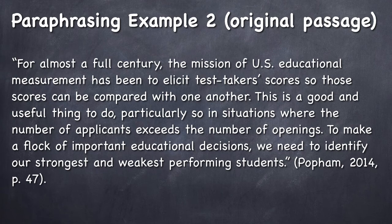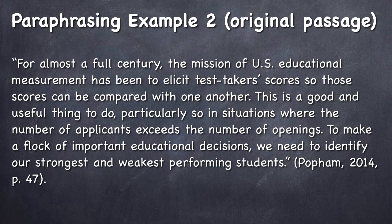Here's our second paraphrasing example. Here's the original passage. For almost a full century, the mission of US educational measurement has been to elicit test takers' scores so those scores can be compared with one another. This is a good and useful thing to do, particularly so in situations where the number of applicants exceeds the number of openings. To make a flock of important educational decisions, we need to identify our strongest and weakest performing students.